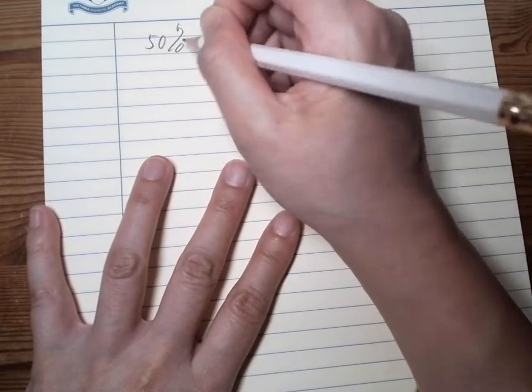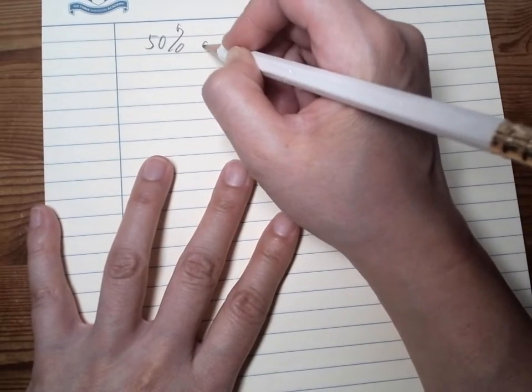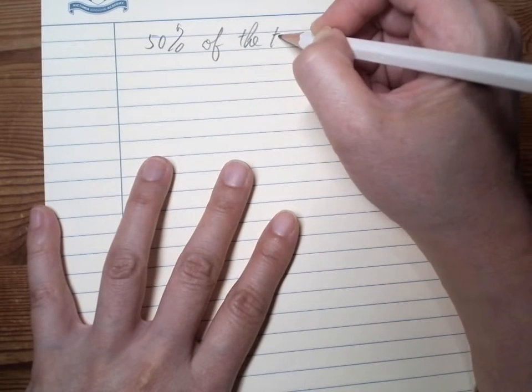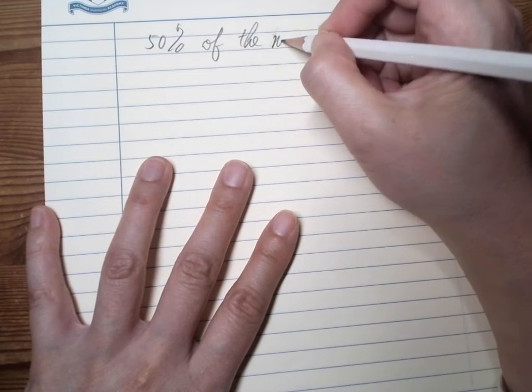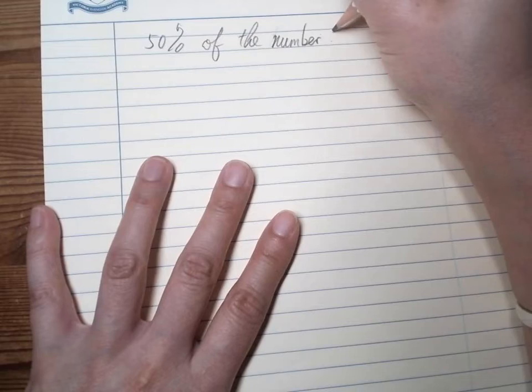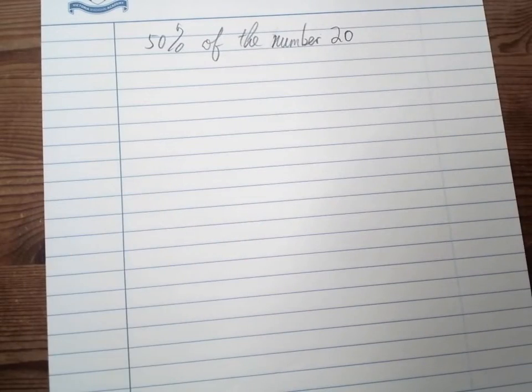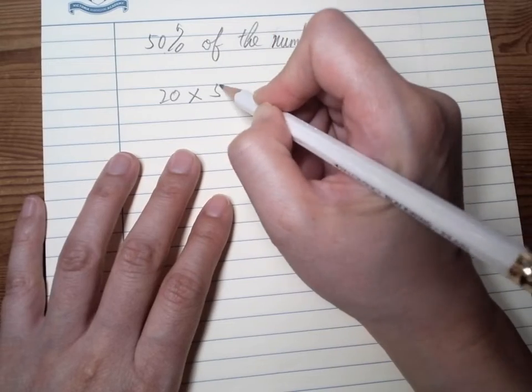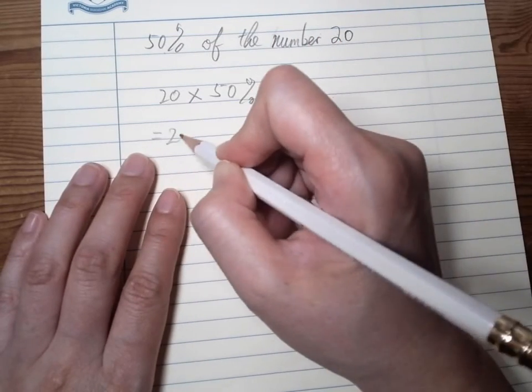We will have 50 percent of the number 20. So this time we have 20, but we want 50 percent of it, so we multiply to get the part of it, which in fraction...